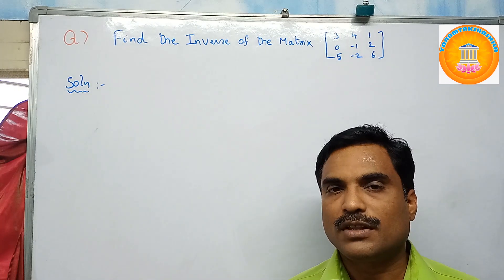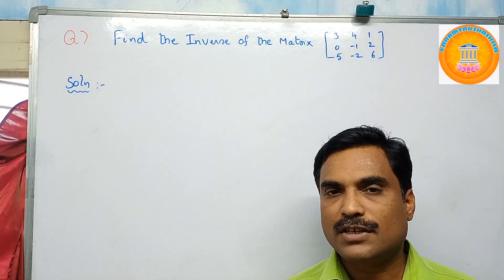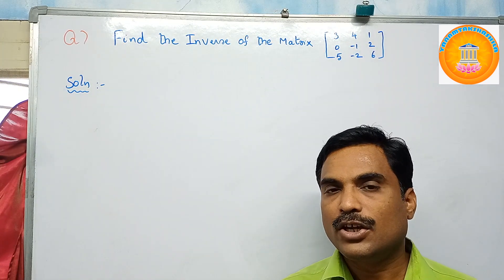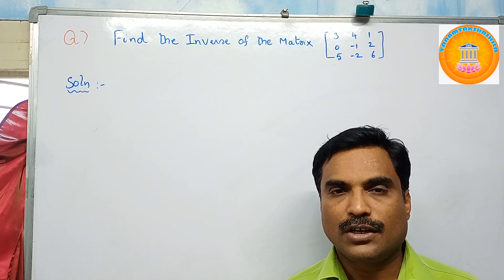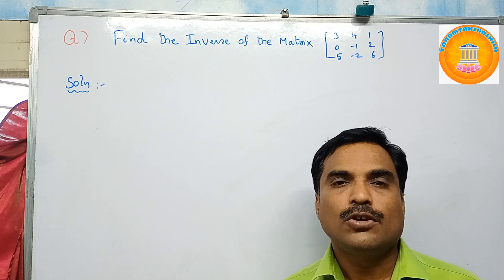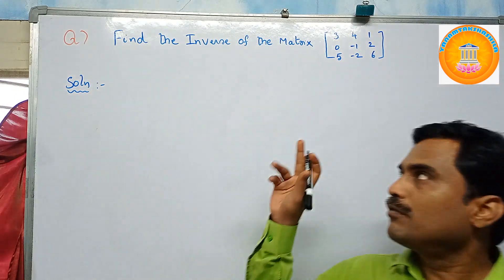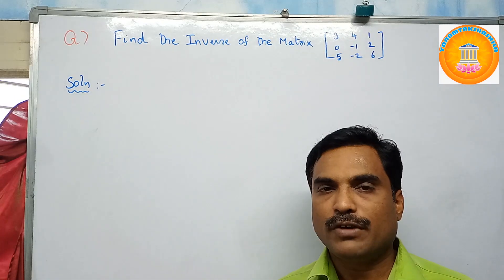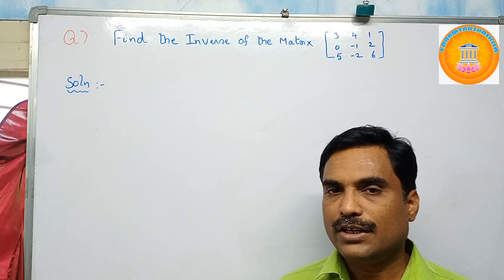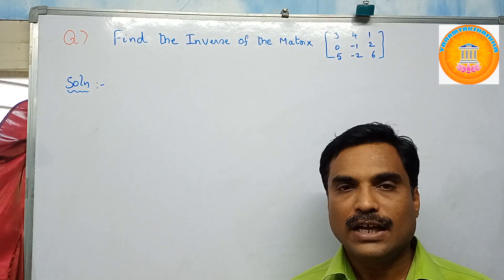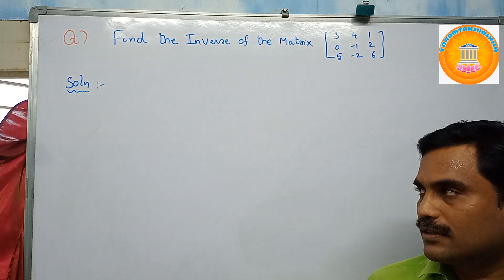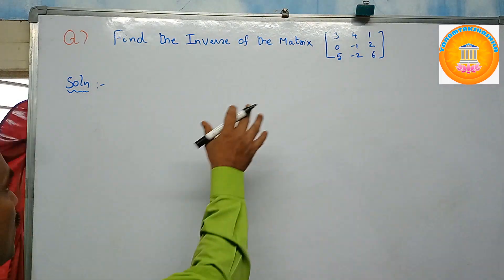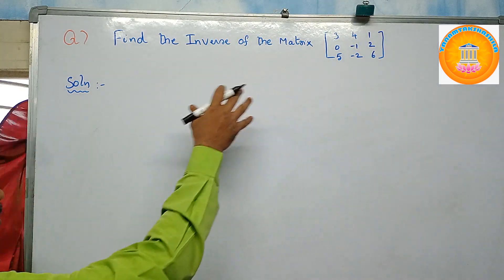For this you need to use the formula: A inverse equals one by determinant of A, into adjoint of A. First you need to find the determinant of this matrix of order three, and then you need to find the adjoint of A to get the inverse of this matrix.